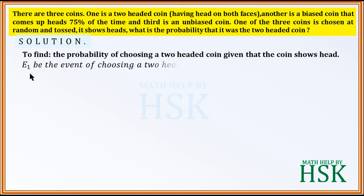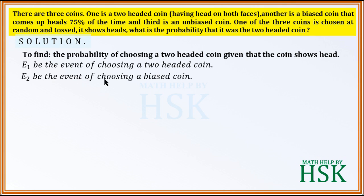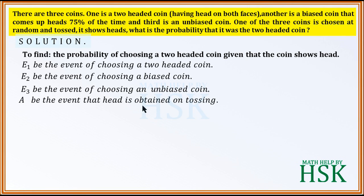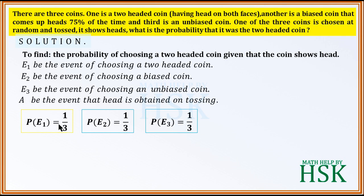We assume: E1 is the event of choosing a two-headed coin, E2 is the event of choosing a biased coin, E3 is the event of choosing an unbiased coin, and A is the event that head is obtained on tossing. Since there are three coins, the probability of E1, E2, and E3 are each equal to 1/3.